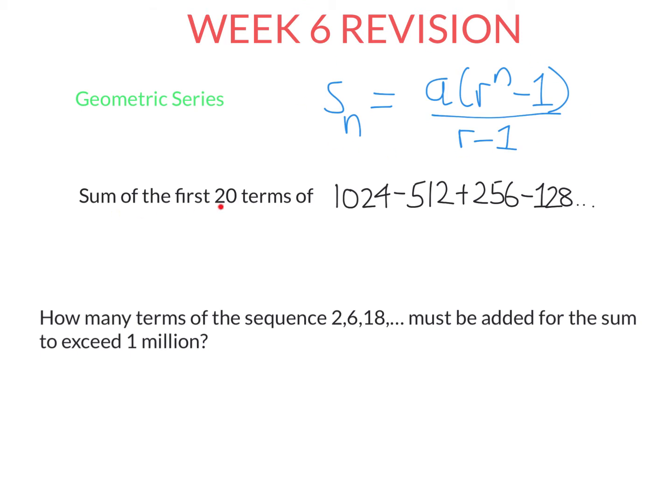Let's use it to find the sum of the first 20 terms of this sequence. So S20, sum of the first 20 terms is equal to A, first term, times R to the power of N. If you don't know R, take any term and divide by the previous term. Here R is negative 0.5.